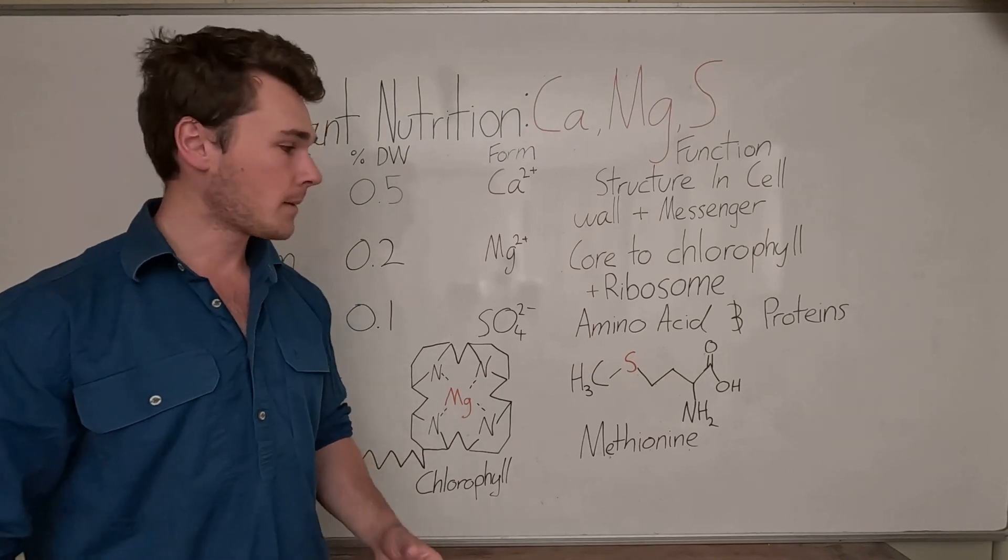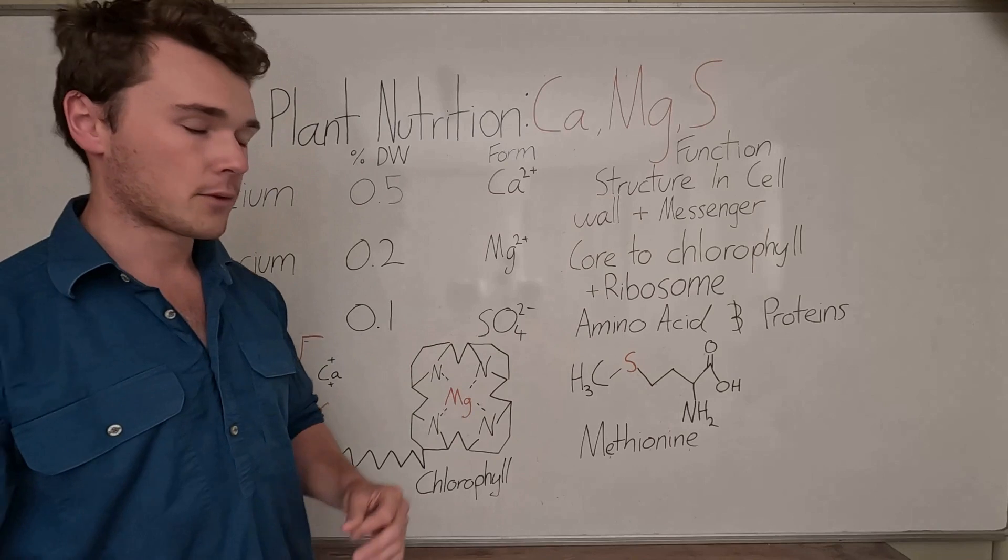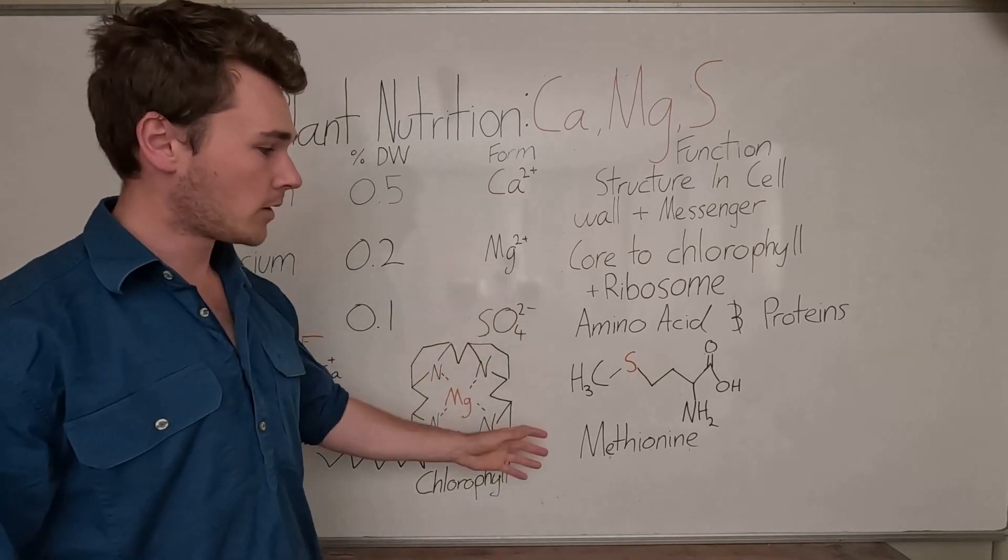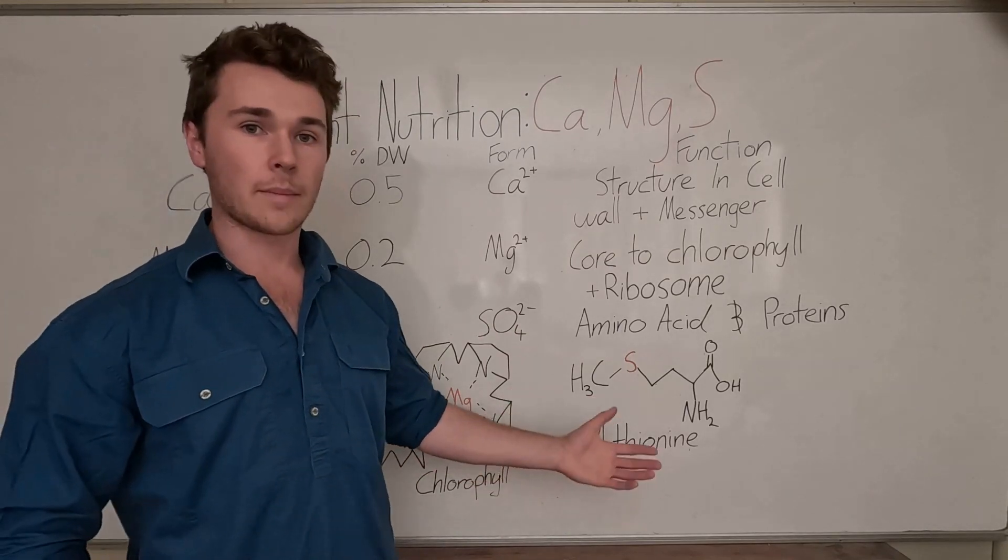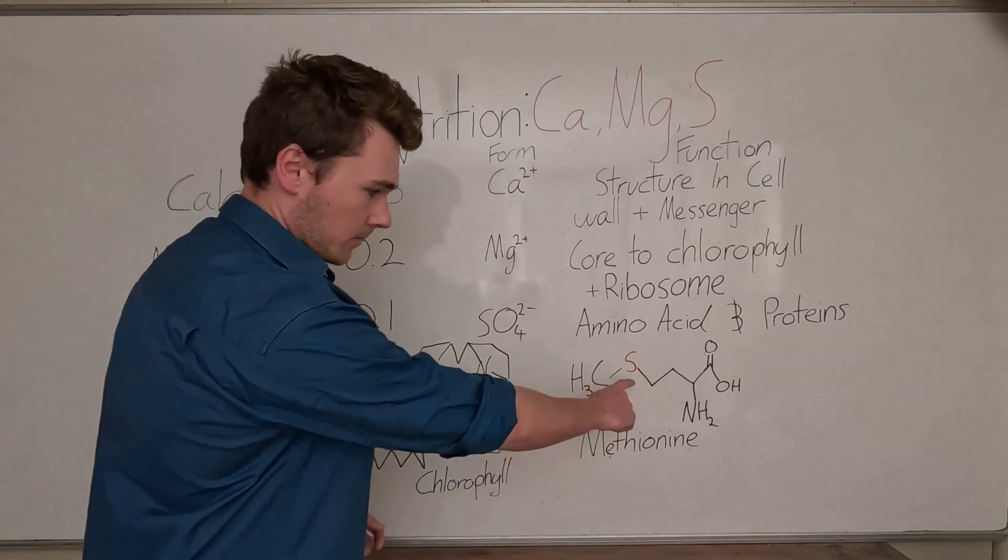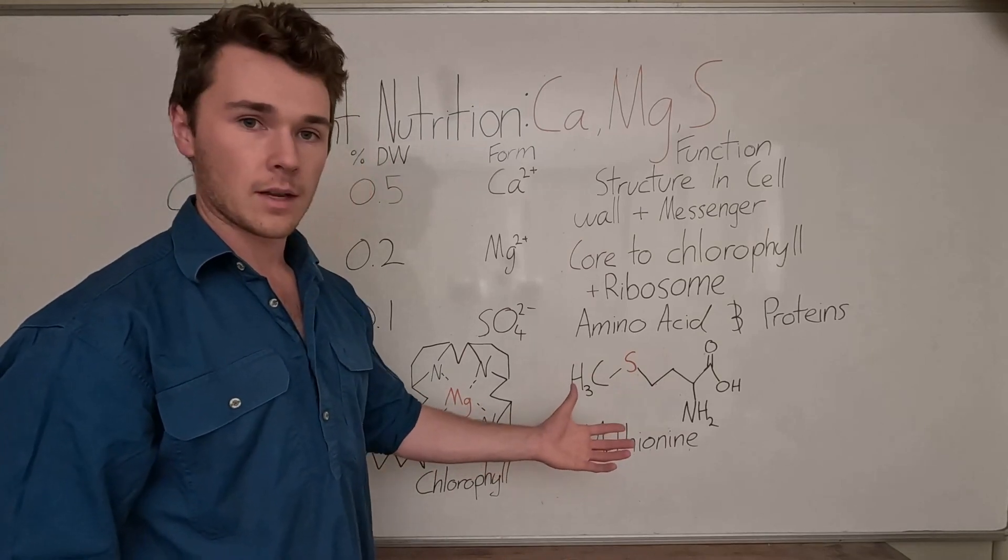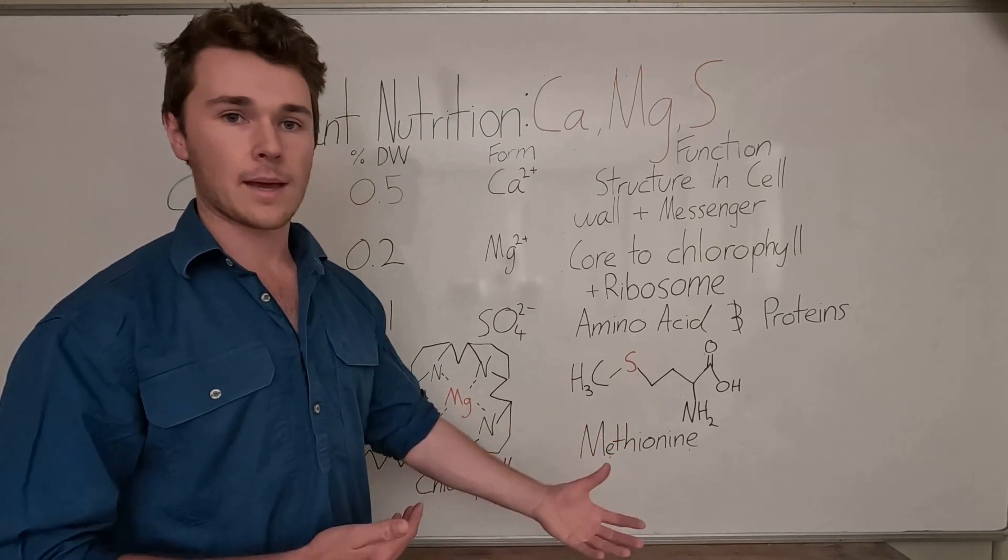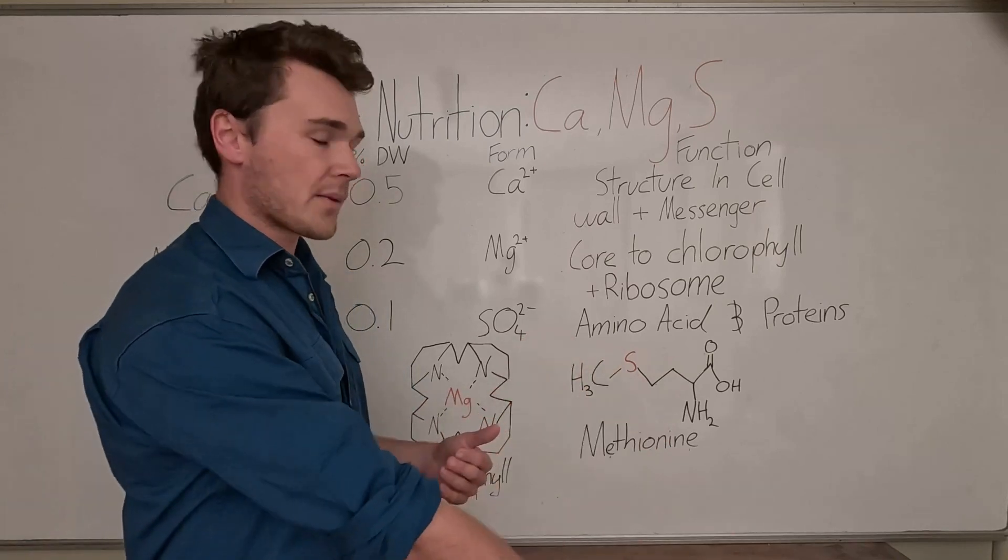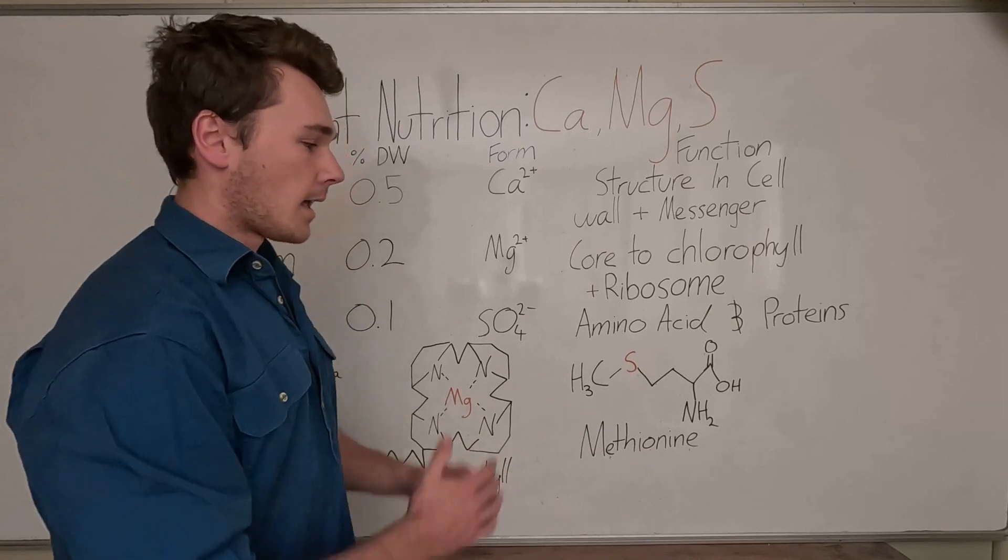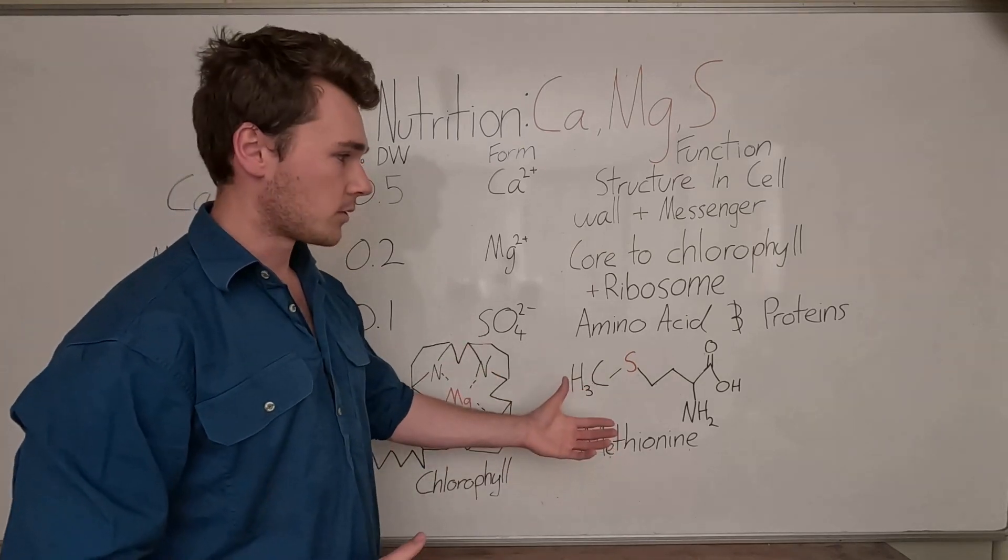Finally, we have sulfur. Sulfur is very important for the formation of different amino acids and protein synthesis. So here we have methionine. So this is an essential amino acid. So you can see here the sulfur. Sulfur is used in the building of the amino acid. If there was no sulfur, we wouldn't be able to build the amino acid. And then we wouldn't be able to build proteins. We would have dysfunctional proteins that wouldn't be able to do things. And that's really the main function of this nutrient.